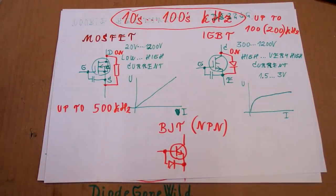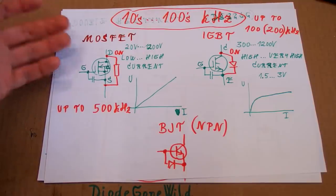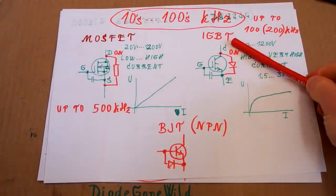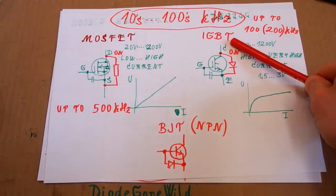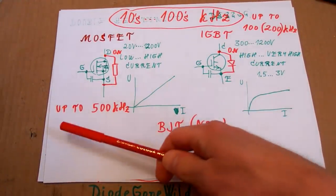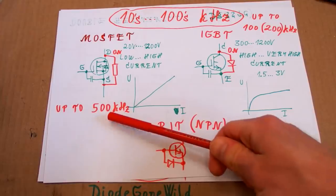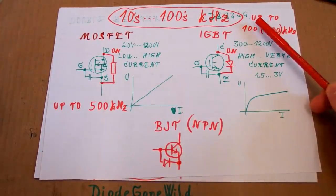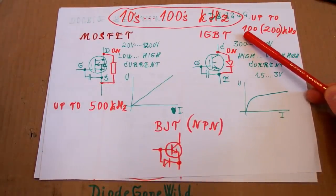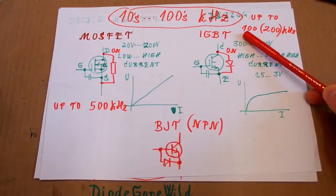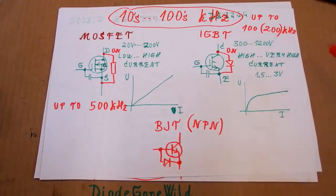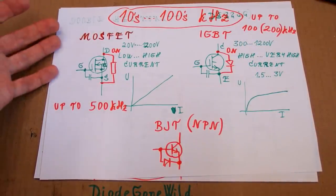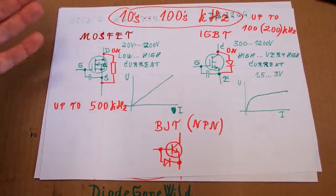Another difference is that MOSFETs are a bit faster than IGBT transistors. MOSFETs are generally used up to about 500 kilohertz, and of course over time you get faster and faster types as they keep improving.